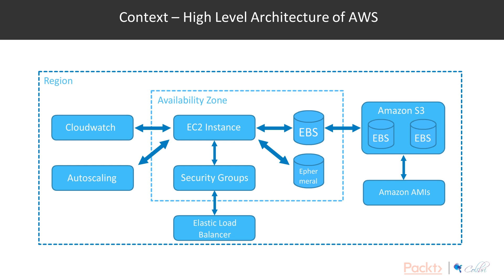An EC2 instance is made up of a number of components. First we have ephemeral storage — local instance storage on the actual hardware the VM runs on. We have EBS storage, which stands for Elastic Block Storage — that's network block-based storage. We have security groups, which are the virtual firewalls protecting our EC2 instances. All of these work together to provide a virtual machine within which you can run your application. All of these sit within an availability zone, while Amazon S3 sits outside.